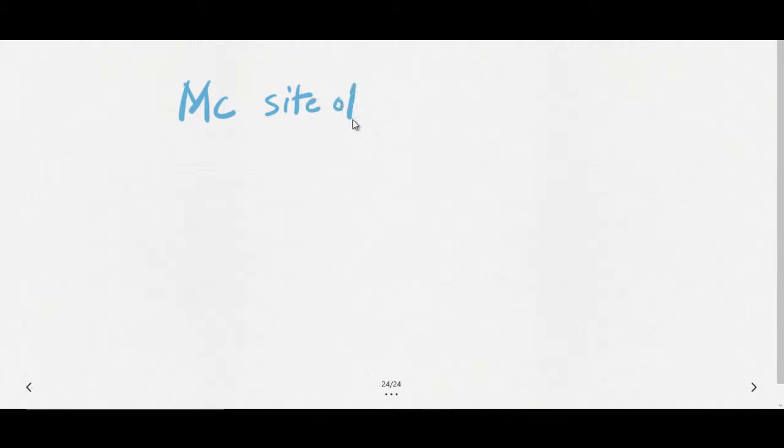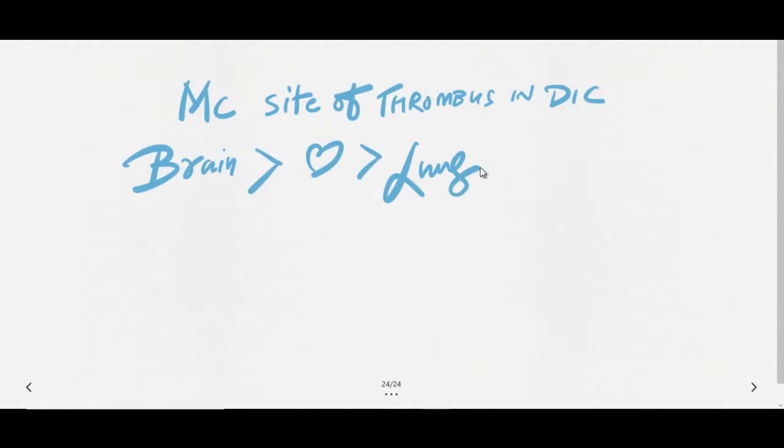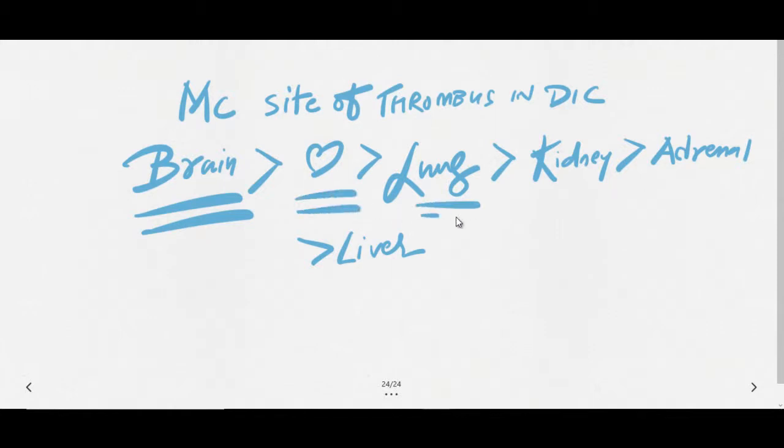Now let us see what are the most common sites which are affected in case of DIC where you can see the thrombosis or thrombus formation. The first site which is very common, or the most common site, is actually the brain, followed by heart, lungs, kidneys, and adrenal, followed by liver. So brain is the most common site where you can see thrombosis, followed by heart and lung if you have to read the top three.